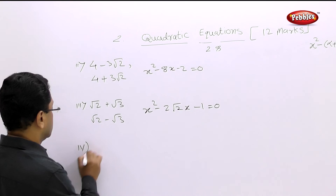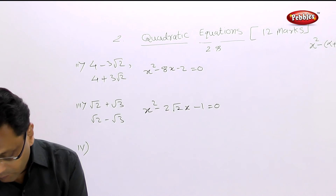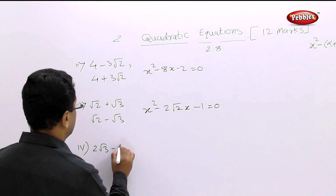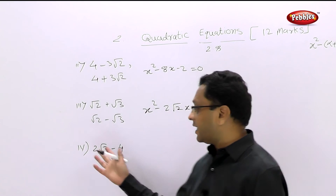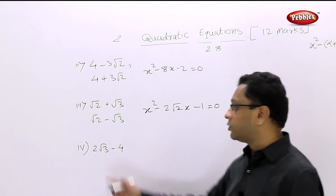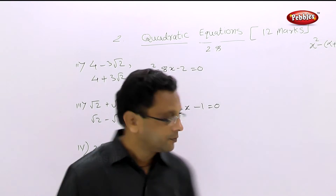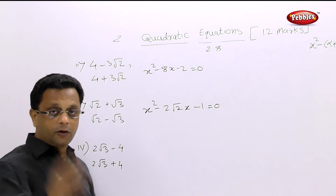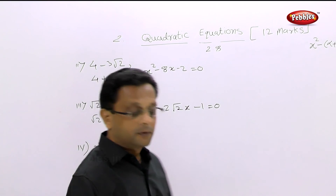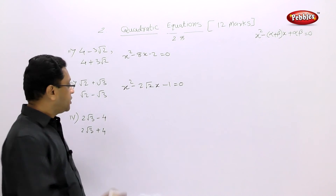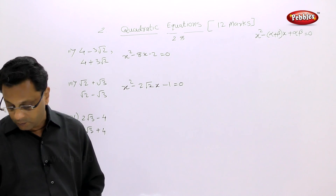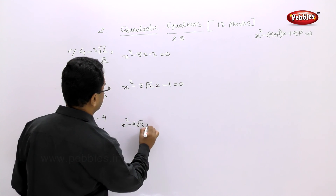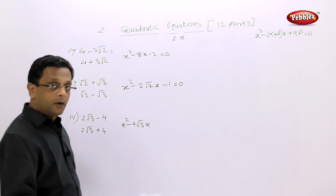Fourth example: the one root given is 2 root 3 minus 4. What will be the second root? The conjugate: 2 root 3 plus 4. Pause your video and solve this. The answer is x squared minus 4 root 3 times x minus 4 equal to 0.